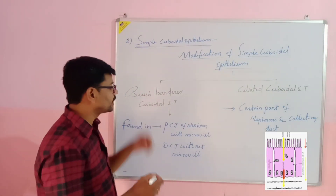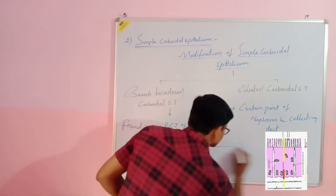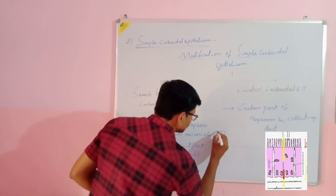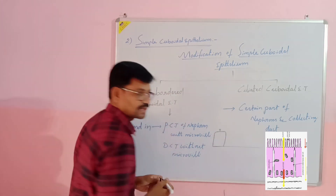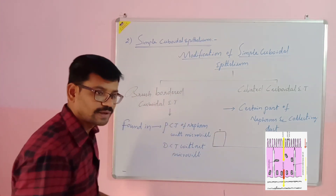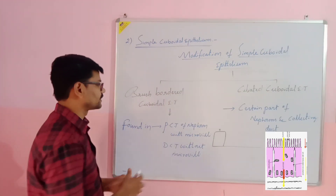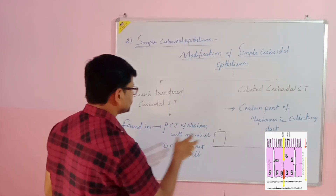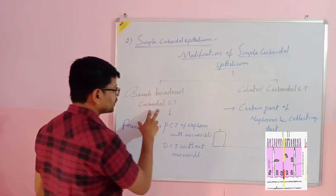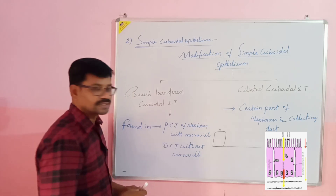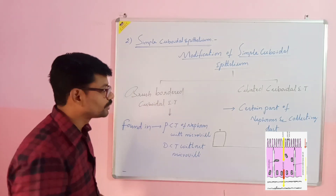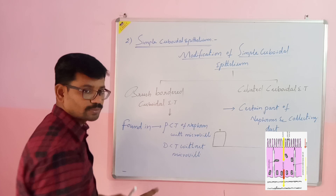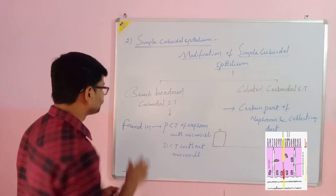Now we are going to explain the modifications of simple cuboidal epithelium. These cuboidal epithelial cells are present on the basement membrane, but sometimes the apical surface of the cell gets modified to perform a particular function. Based on this modification, there are two types: brush bordered epithelium and ciliated cuboidal epithelium.